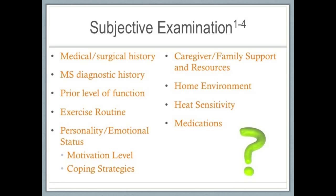Personality and motivation is important because MS requires lifelong management. Does their personality encourage this? What motivation do they have, and how are they coping with their diagnosis of MS? This also cues us to provide them with resources for support groups, MS education, financial planning, or mental health. Caregiver and family support is essential for planning the progressive changes that occur with MS. Determining how much assistance is available and the family resources an individual has allows you to individualize your intervention for the patient's specific circumstances.